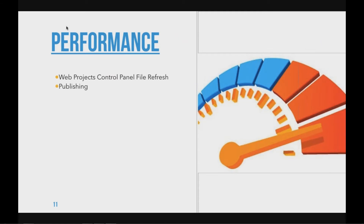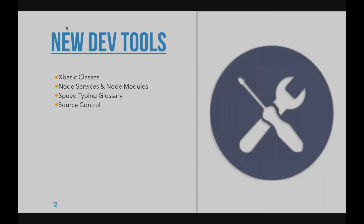On performance: when you drop new files into the web projects control panel they now refresh essentially instantaneously. The big one is publishing — a lot of work was done behind the scenes to make publishing your app much much faster. When you publish to Alpha App Server or Alpha App Server with IIS, there have been significant optimizations. For very large projects we're seeing significant decreases in publish time, so you can get your code up on your server that much quicker.